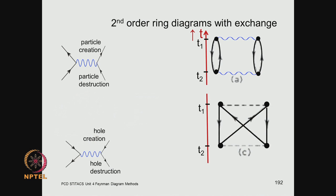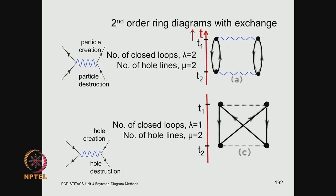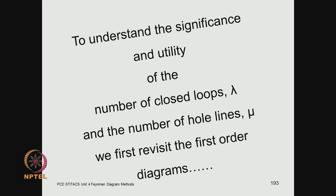We were dealing with second-order diagrams in our previous class. We had the Coulomb diagram — the direct and the exchange. We had started talking about the number of loops and the number of hole lines. In the exchange, you have one closed loop, and the number of hole lines is 2, written as mu following the notation of Rains. To understand how the number of closed loops and hole lines is used in interpreting Feynman diagrams, let me go back to the first order diagrams.